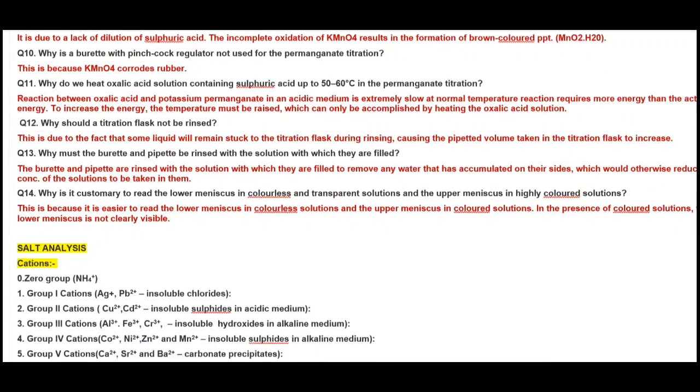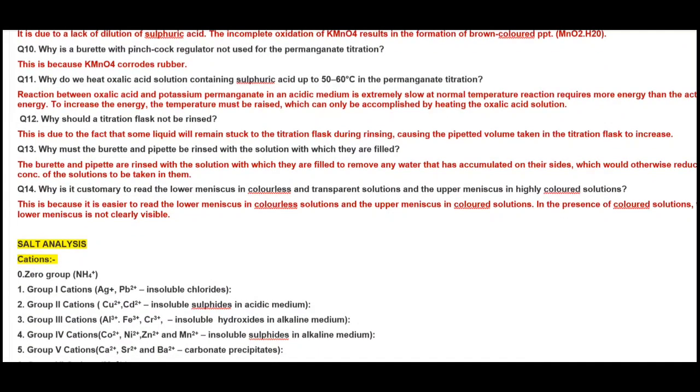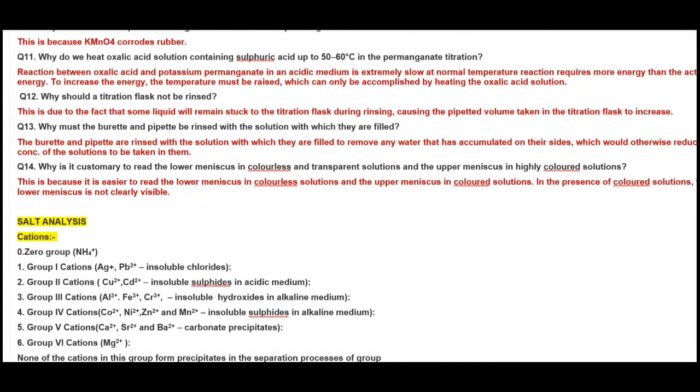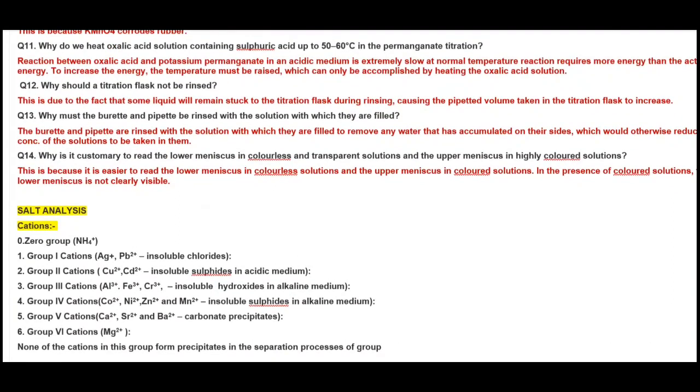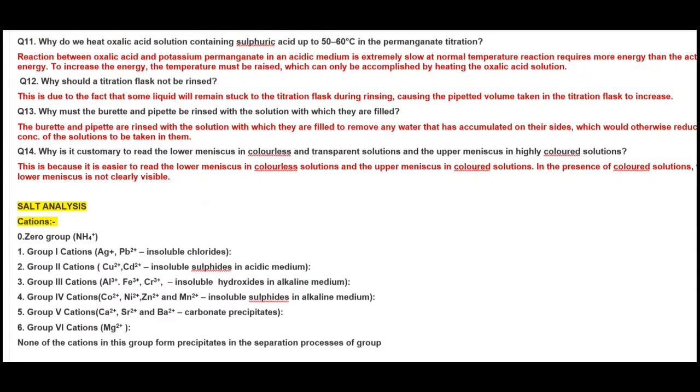Why is a burette with pinch cock regulator not used for permanganate titrations? Because KMnO4 can corrode rubber. Why do we heat oxalic acid solution containing sulfuric acid up to 50 to 60 degrees in the permanganate titration? Because oxalic acid reaction is slow and because of high energy barrier, so in order to overcome that energy barrier to provide extra energy, temperature must be raised for oxalic acid titration.